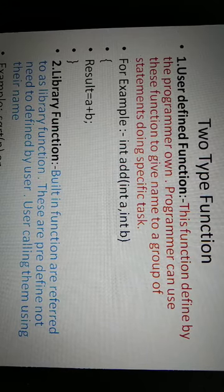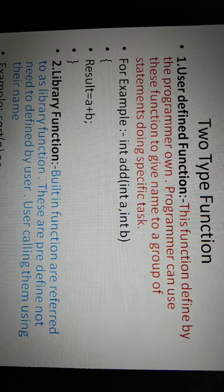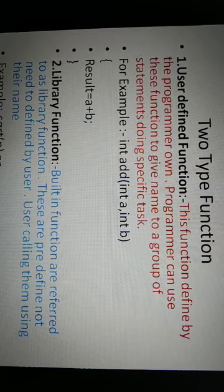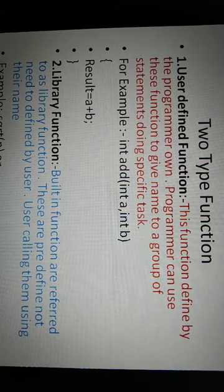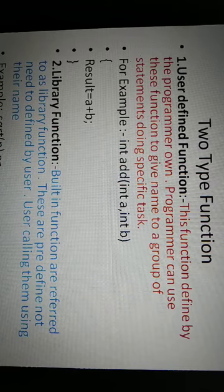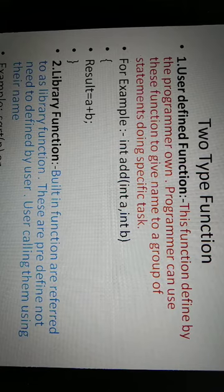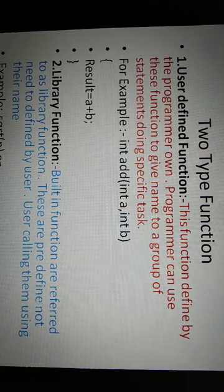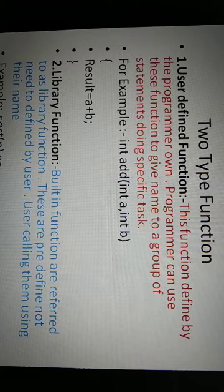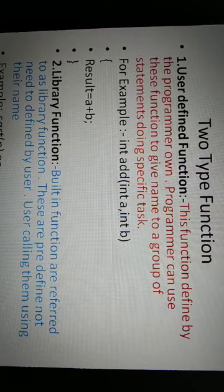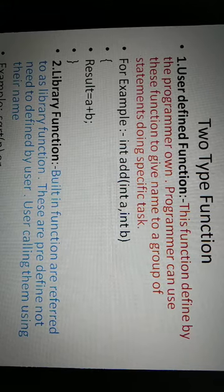Type of function: function basically two types. First is user-defined function and second is library function. User-defined function means the function defined by user, the name given by user. This is a specific task. The user has authority to define the variable and parameter. For example, integer add with integer a and integer b parameters.